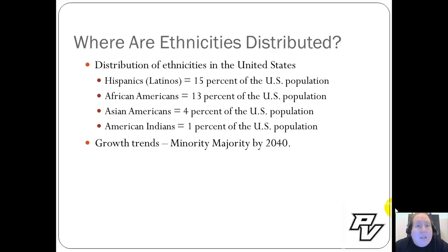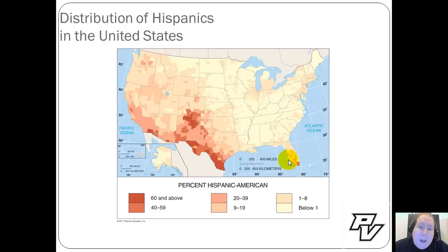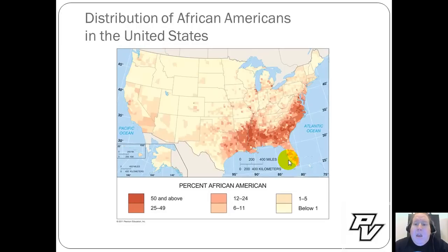Where are these groups distributed throughout the United States? A lot of it is based on migration. When we look at the distribution of Hispanics in the United States, as you can see from the map, they are for the most part right along the US-Mexican border, and then we have a population cluster in South Florida — areas where Hispanics have typically migrated into the United States when they first moved here.